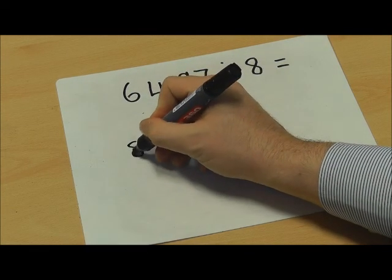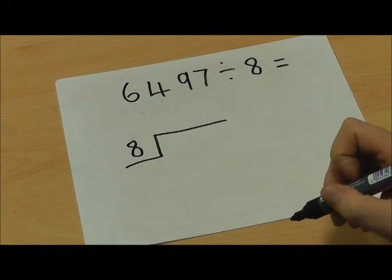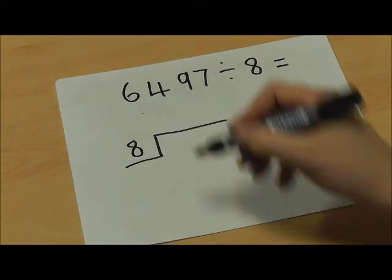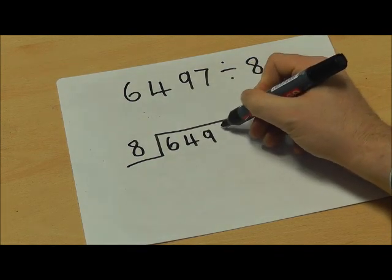So I'm going to use my short division method as normal. I'm going to draw my box and put the smaller number on the outside, which is 8, and the larger number on the inside, which is 6497.